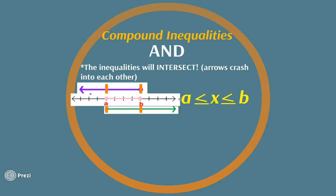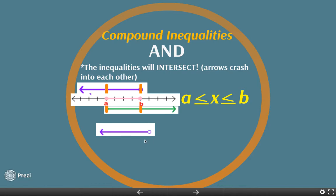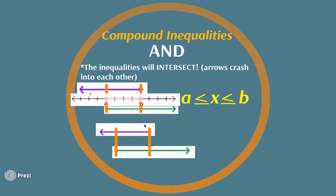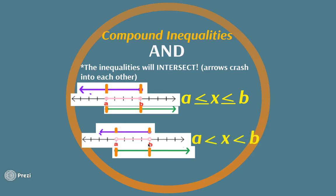The same thing happens when you have an AND inequality that is not equal to — you have open bubbles instead of closed ones. One arrow goes this way and another arrow goes the other way, and they still collide. Your final answer is where the two arrows collide, from a to b. These are all values larger than a and less than b, and since the bubbles are open, we do not write the line underneath — so a < x < b. Remember, the inequalities must face the same direction.